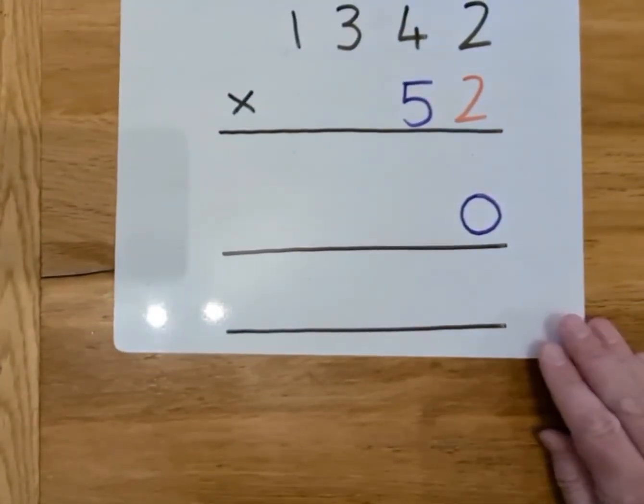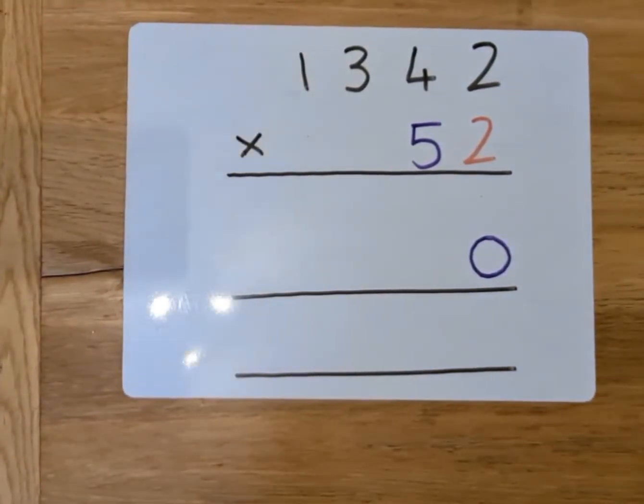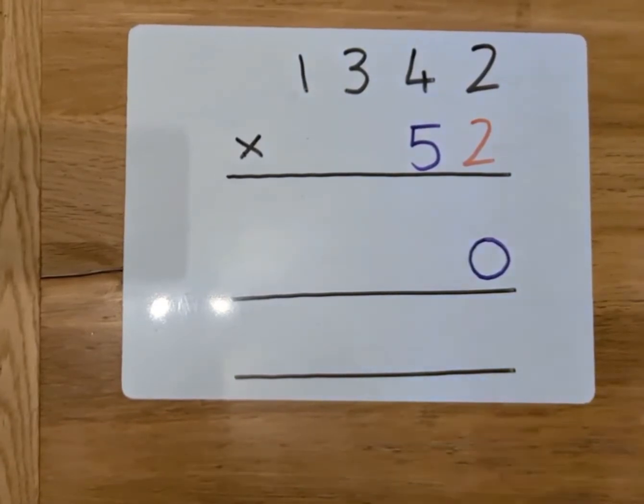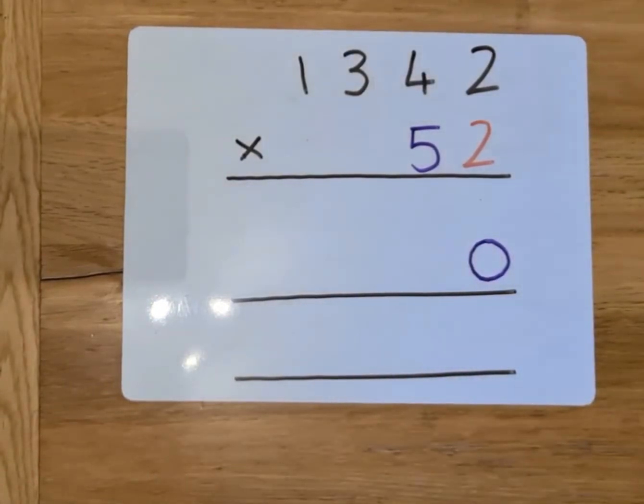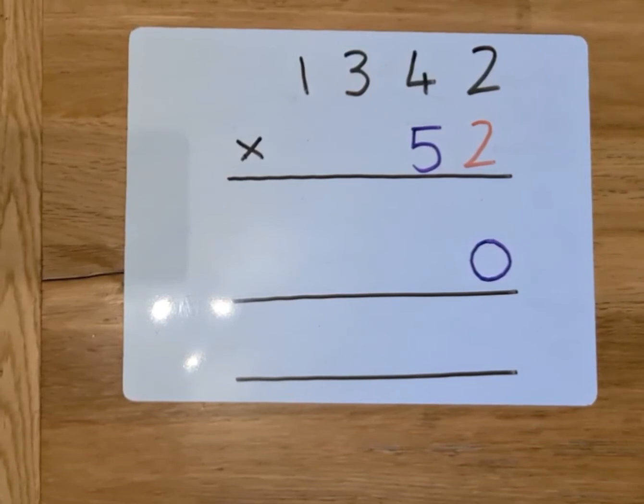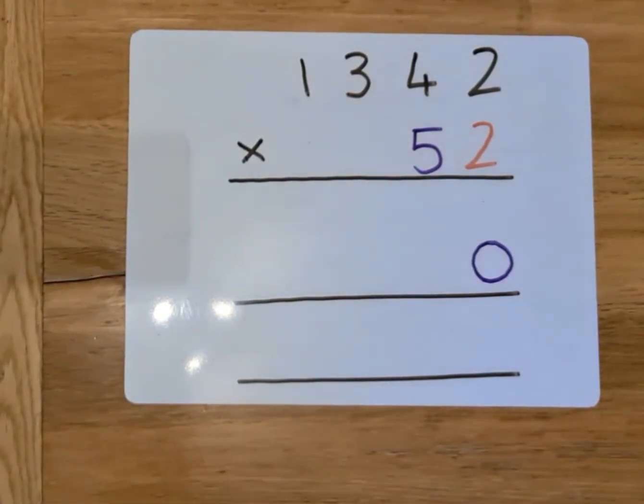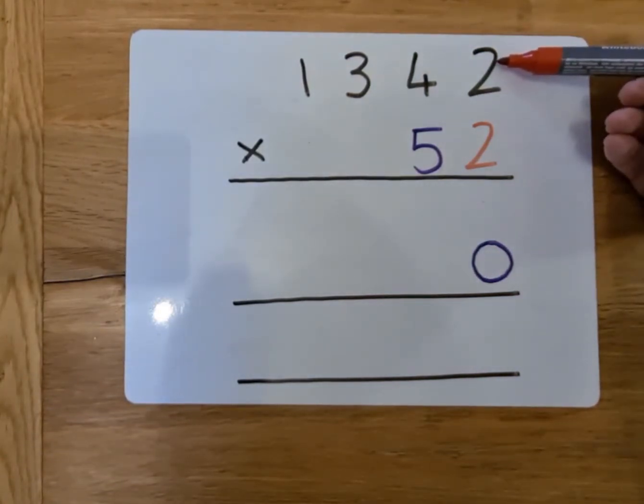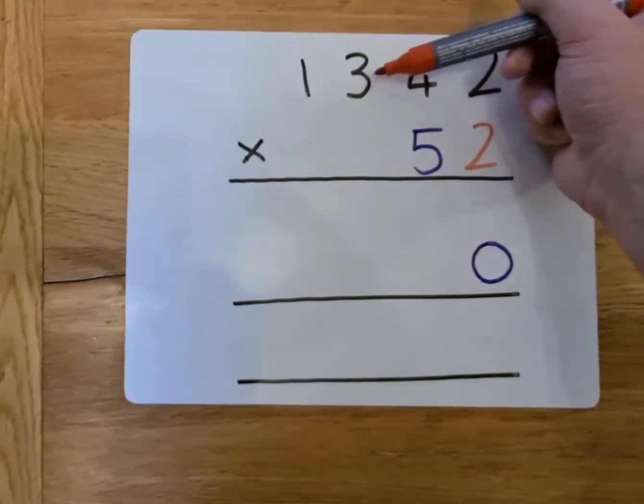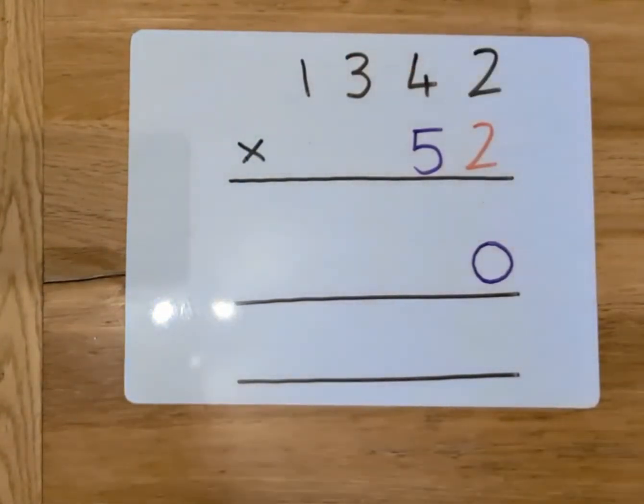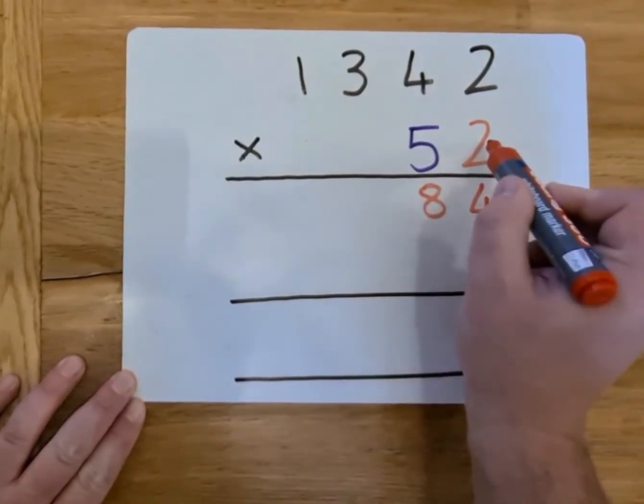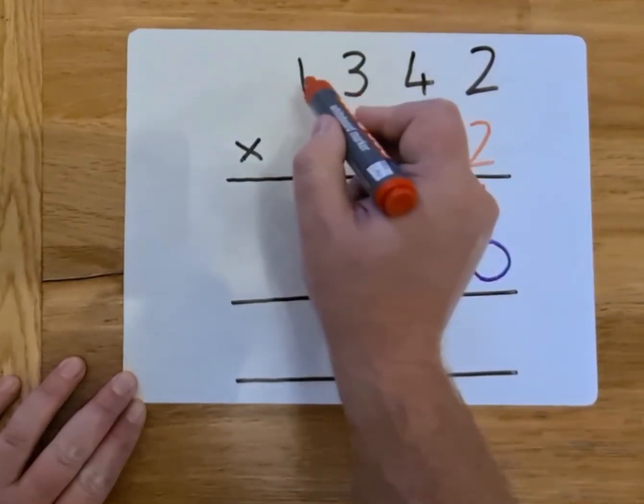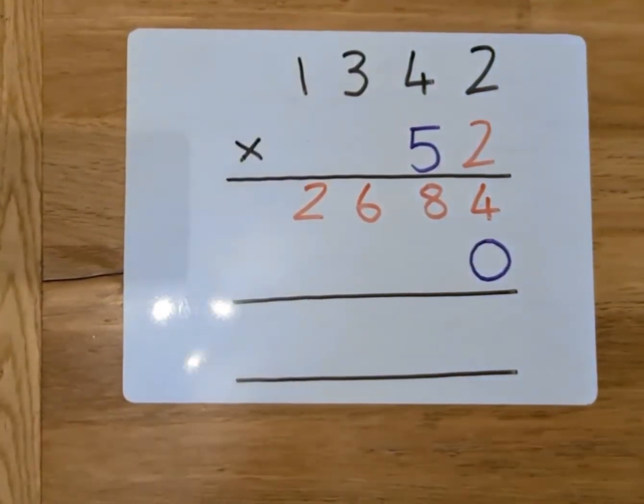So, you can pause the video here and tell me how you work it out. I've laid it out already. I've popped that 0 in for when I'm multiplying the tens. Try and work this one out. Okay. So, we'll start with the units again. We're going to do 2 times 2, then 2 times 4, 2 times 3, and 2 times 1. So, starting off with 2 times 2, 2 times 2 is 4. 2 times 4 is 8. 2 times 3 is 6. And 2 times 1 is 2. We've multiplied all of the units there.